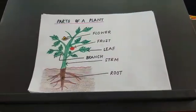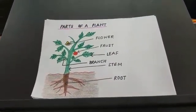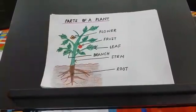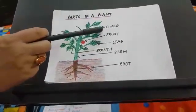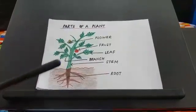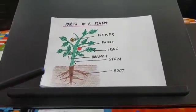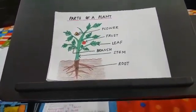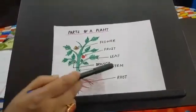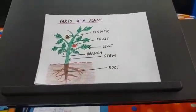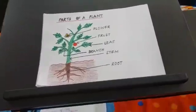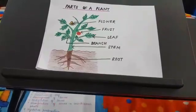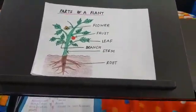Before we start with the external structure of a leaf, let us know about the parts of a plant. The main parts of the plant are root, stem, branch, leaf, fruit and flower. We are going to study about flower and fruit in chapter 2. Now, roots absorb water and minerals from the soil. It fixes the plant to the soil, and transports food from the leaf to other parts of the plant.